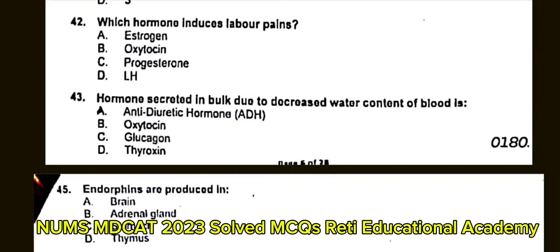Question number 43: The hormone secreted in bulk due to decreased water content of blood is? A. Antidiuretic hormone (ADH). B. Oxytocin. C. Glucagon. D. Thyroxin. The correct answer is A: ADH.